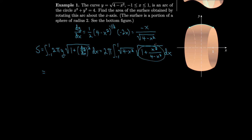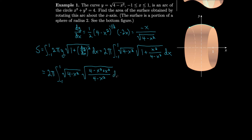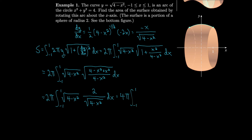We find a common denominator, giving 2π times the integral times the square root of (4 − x² + x²) over (4 − x²), by writing (4 − x²)/(4 − x²) for the 1. The x² terms cancel, which is nice, and we get 2π times the integral from −1 to 1 of √4 divided by √(4 − x²). Moving the square root from top to bottom lets us pull out the 2, giving 4π times the integral, and then the √(4 − x²) terms cancel to leave just 1.